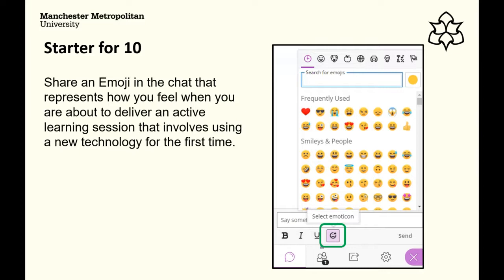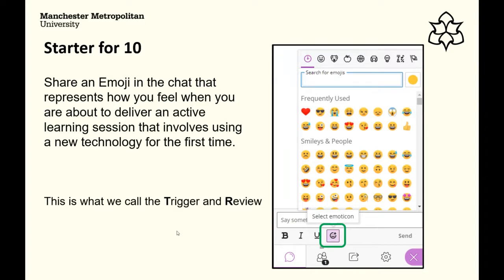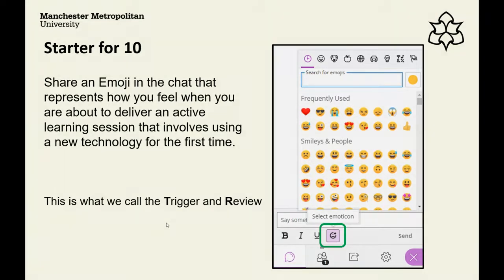What we're doing here is what we call a trigger activity. We're trying to get you thinking about how you feel about something — to tell us what you already know or what your experience is. As responses come in, we review them to see if there are any common experiences or differences in opinions, and we highlight those. Some people are excited, some are a little bit nervous — a whole range, which is absolutely fine.